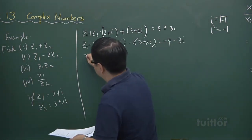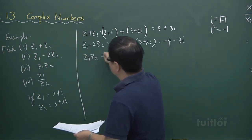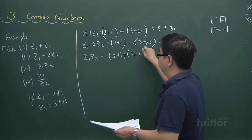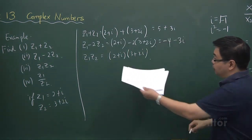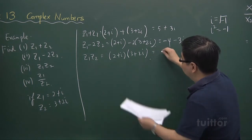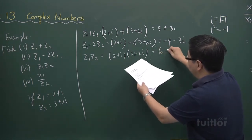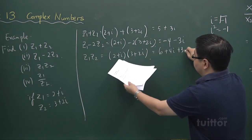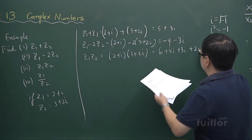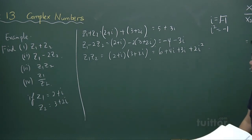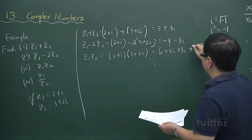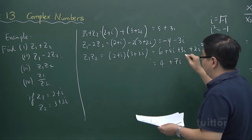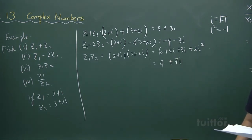And for part 3, we have z1 times z2. So that is the same as 2 plus i multiplied by 3 plus 2i. Using your algebra to multiply term by term, you get 2 times 3 is 6, 2 times 2i is 4i, i times 3 is 3i, and i times 2i is 2i squared. And 2i squared, of course, is minus 2. So we have 4 plus 7i.